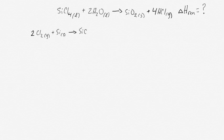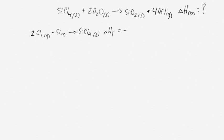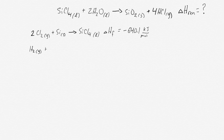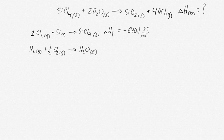Those components are SiCl4, H2O, SiO2, and HCl. We'll have equations to make each of those individual components from their constituent elements. SiCl4 can be made from chlorine gas and silicon, and that equation has a delta H of formation for making one mole of SiCl4, which is negative 640.1 kilojoules per mole. Similar equations can be written for making H2O, SiO2, and HCl gas.